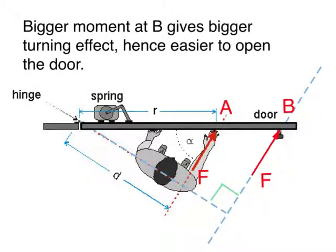The pivot is at the hinge, and the door will rotate about this hinge. The door will open this way.